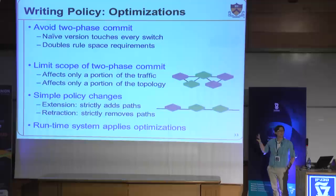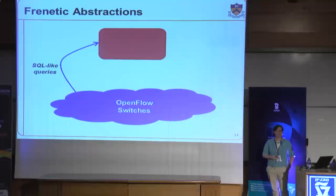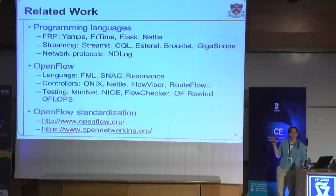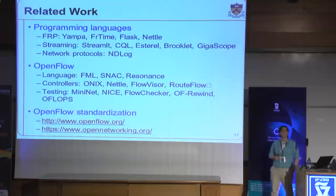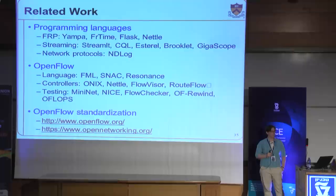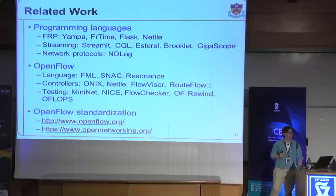To summarize, we have three different abstractions: an SQL-like query language for asking the network what's going on, a way to do policy composition so multiple independent modules can be composed, and a way to do consistent updates once policies affect a change in the network — pieces for each of the three parts of the control loop. This work draws heavily on Functional Reactive Programming from the programming languages community, the NETL work by Paul Hudak's group at Yale, and stream processing literature including GigaScope at AT&T on querying packet streams. There's also a lot of work on OpenFlow including different languages, controller platforms, and tools for testing and debugging OpenFlow software.